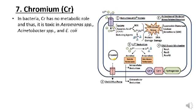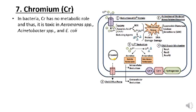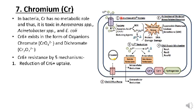Chromium: in bacteria, chromium has no metabolic role and is thus toxic in Aeromonas species, Acinetobacter species, and E. coli. Chromium exists in the form of oxyanions, chromate and dichromate. Chromium resistance involves five mechanisms. The first is reduction of chromium uptake via the sulphate transport system. The second is chromium efflux — chromium is effluxed out by the CHRA efflux pump.